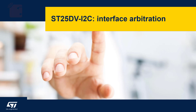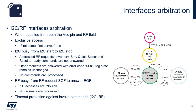Now we are going to look at interface arbitration. It is important to understand the arbitration between RF and I2C in the ST25DV. First access is exclusive and works on a first-come, first-served basis. When I2C is busy, RF cannot access — this spans from the I2C start to the next I2C start. Responses differ though: address, RF request, inventory, stay quiet, select, and reset-to-ready commands are not answered, and all other RF commands are answered with error code 0x0F. When RF is busy, it spans from the RF request start of frame to the answer end of frame.